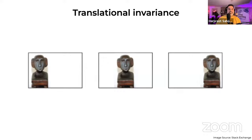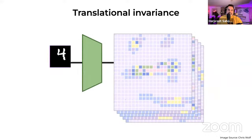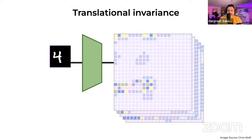Imagine trying to train a network to recognize pictures of statues. If you train this network on pictures where the statue is near the left of the image, and then try to generalize to pictures where statues are in the middle or to the right, chances are the network won't recognize the statue there. That's because a plain vanilla neural network does not have a property known as translational invariance.